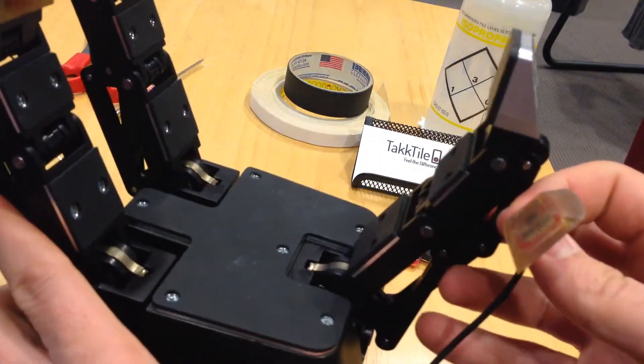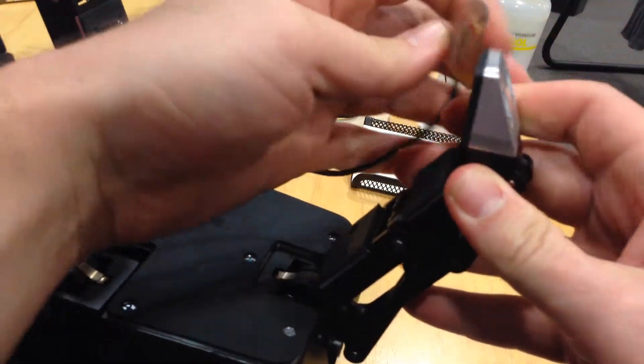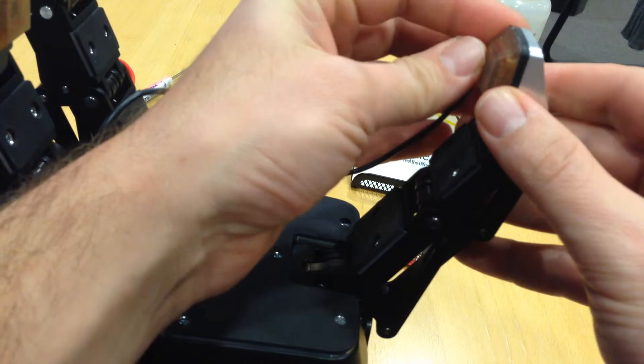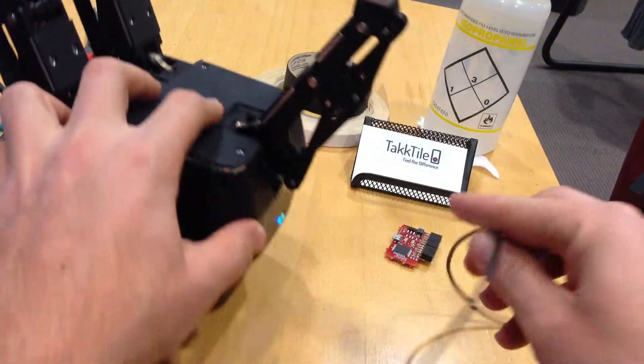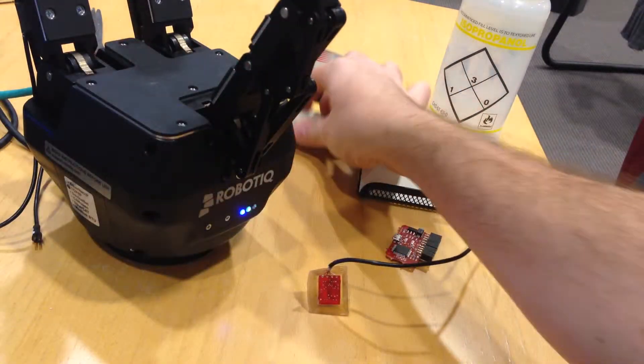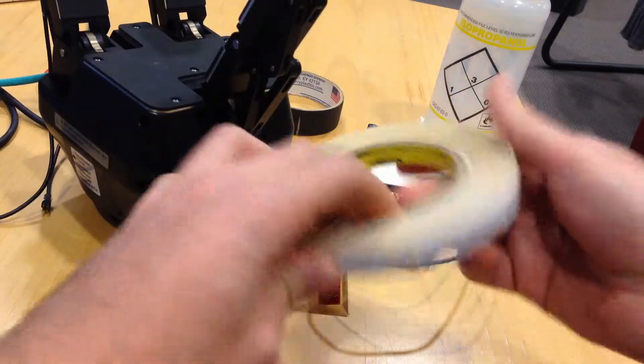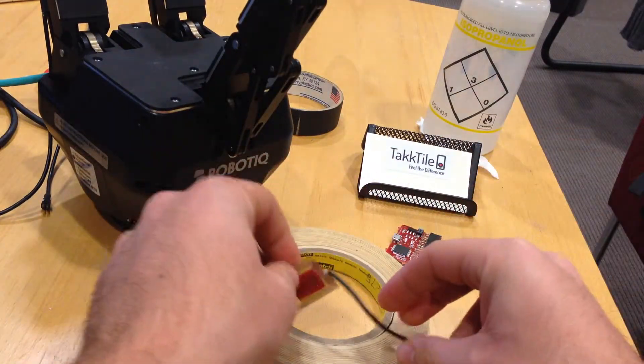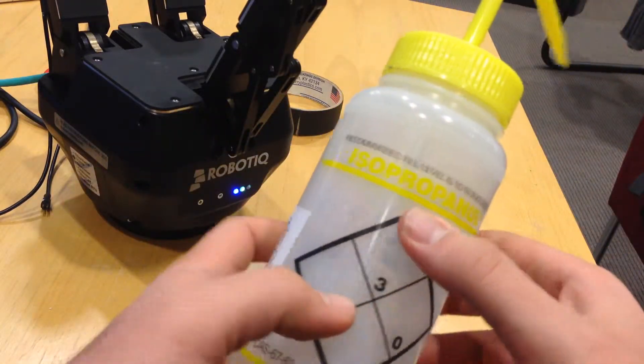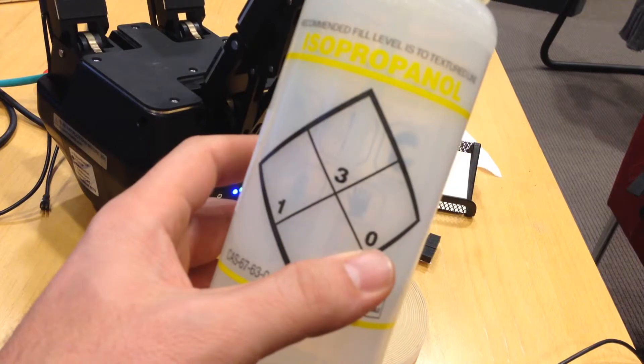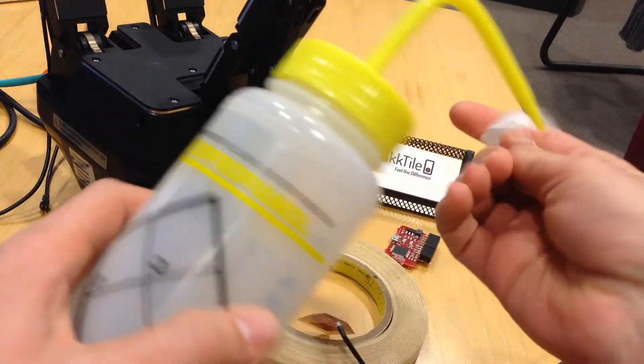The way we recommend attaching it is using double-sided tape or super glue. But first, we need to clean the surfaces. We'll use IPA for this. Wet the material slightly.